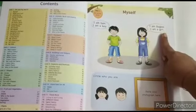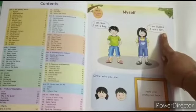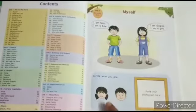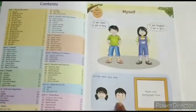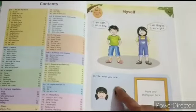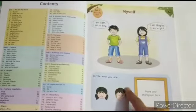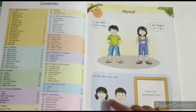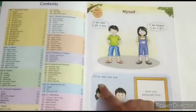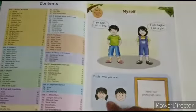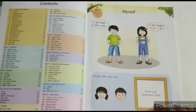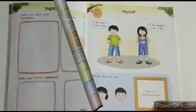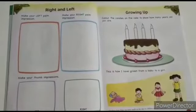So now children, it's your turn. You have to say, are you a girl or a boy? If you are a boy, you will circle on the boy's face. If you are a girl, you will circle on the girl's face. Children, you have to paste your photograph here.